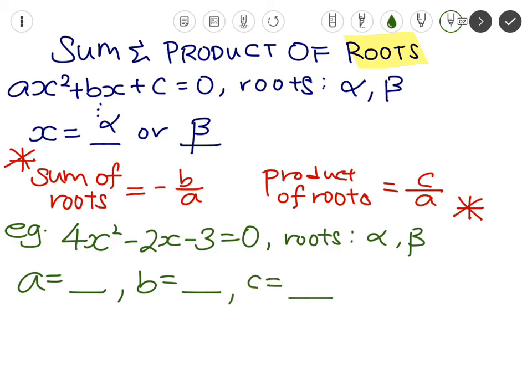Now let me just give you a few moments to think about that. Okay, if you've gotten a as 4, b as negative 2, and c as negative 3, you will have gotten this exactly correct.